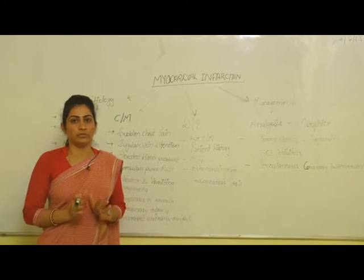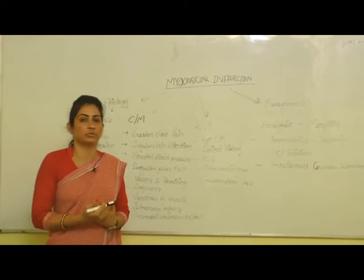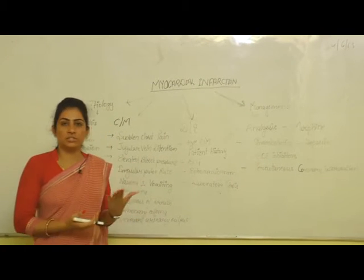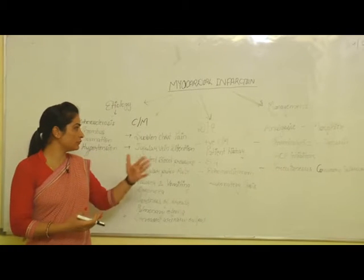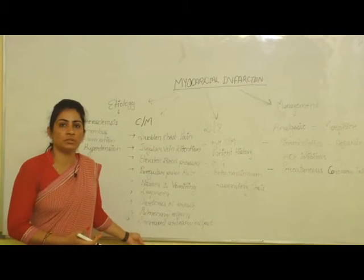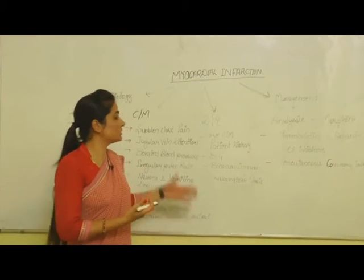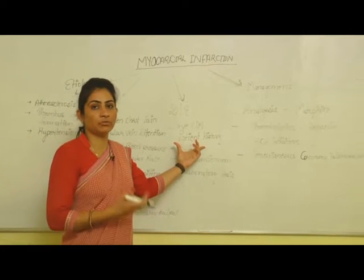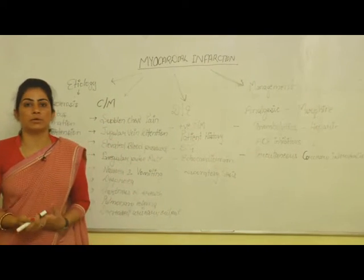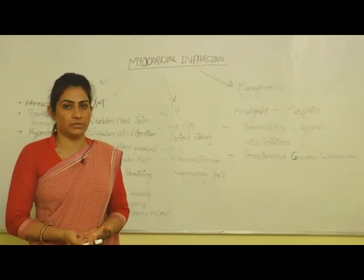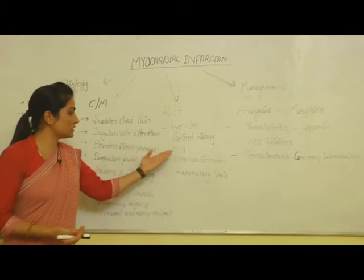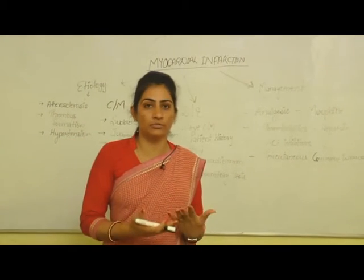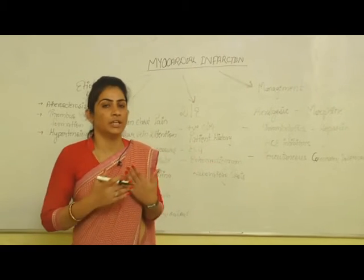How do we evaluate or diagnose myocardial infarction? There are many techniques. First, positive clinical manifestations — if these signs and symptoms are present in the patient, it indicates the presence of myocardial infarction. Second, we can take the patient's history about the present disease, previous diseases, or family history of cardiac diseases. Third is ECG, which is taken within 10 minutes when the patient feels chest pain or when the patient arrives in the emergency ward.